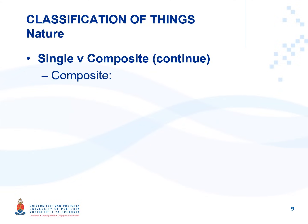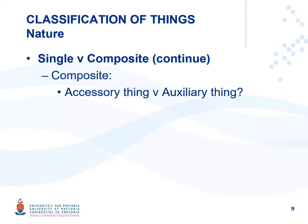In summary: the principal thing is the component that gives the composite thing its identity. The accessory thing has no independent existence while the union lasts, but might have had an independent existence before. So how do we distinguish between an accessory thing and an auxiliary thing? An accessory thing had an independent existence prior to attaching to the principal thing, and it attached in such a way that it lost its independent existence and identity — ordinarily through physical attachment, meaning that if removed, damage will be caused.